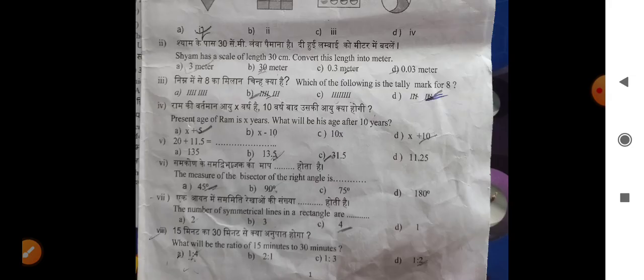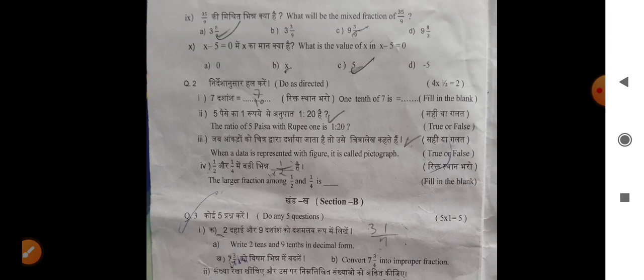What will be the number of symmetrical lines in a rectangle? What will be the ratio of 15 minutes to 30 minutes? We have a mixed fraction of 35.9.